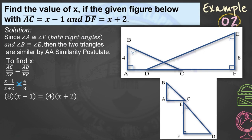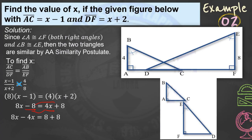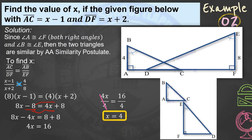Do the cross multiplication: 8 times (X − 1) equals 4 times (X + 2). Using the distributive property, 8X − 8 equals 4X + 8. Transposing, 8X − 4X equals 8 + 8, so 4X equals 16. Dividing both sides by 4, the value of X is equal to 4.